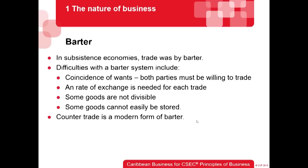You don't really use barter much today, and there's a reason for that — there are certain inherent difficulties in the barter system. One problem is coincidence of wants, which means both parties must be willing to trade. So if I'm a farmer producing corn but I want sweet potatoes, I have to go to the market and find somebody who is producing potatoes and happens to want the corn I have, so that we can conduct a barter exchange.